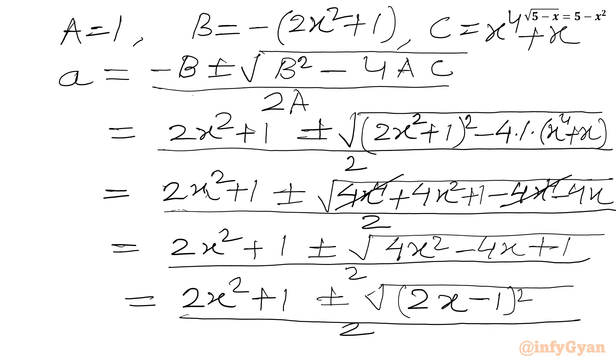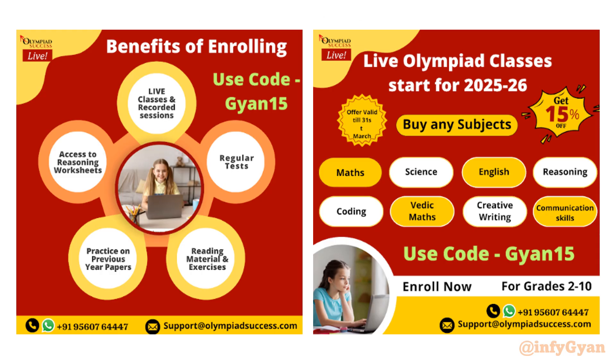Now we can cancel the square root with the square, so we will get A equal to the simplified expression.